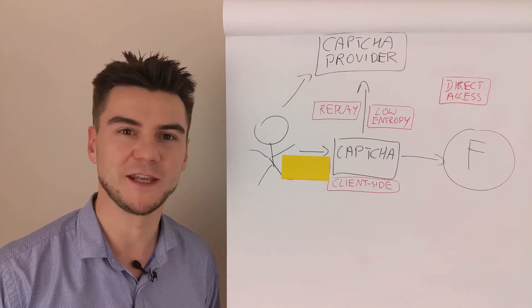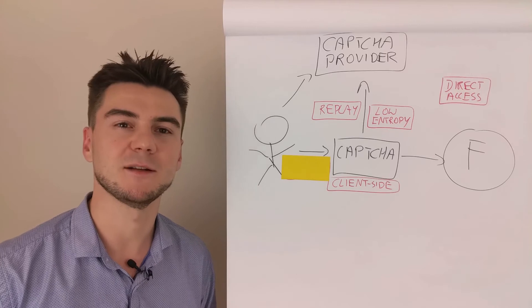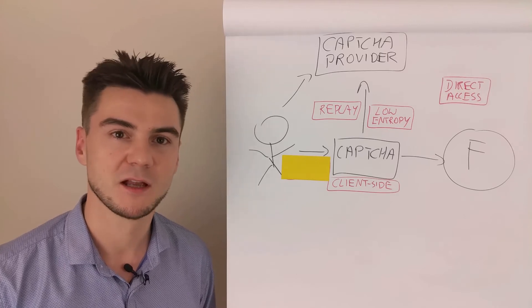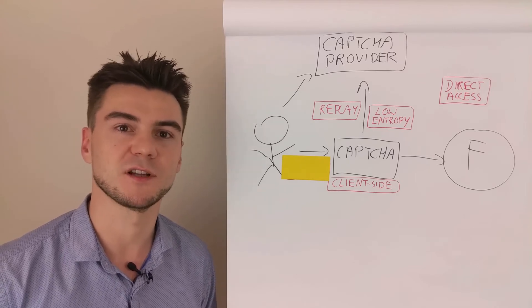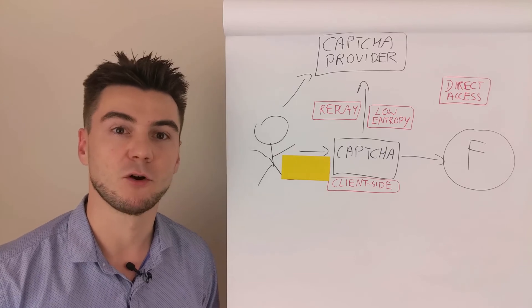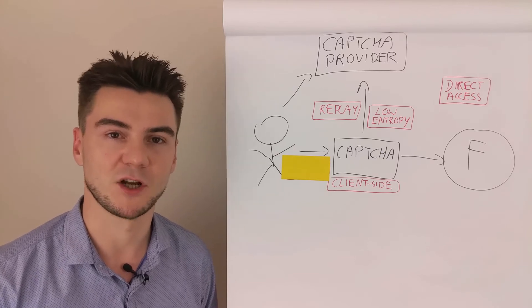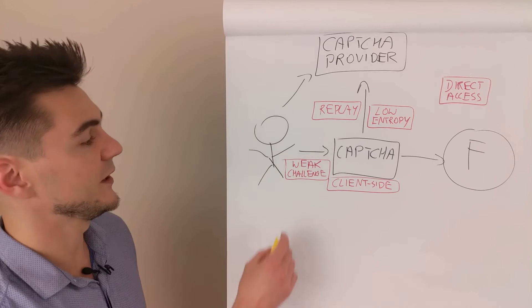And the last one is simply a weak CAPTCHA. So weak that it can be bypassed by automatic tools. For example, an OCR reader to transcribe the text or to automatically solve a manual challenge. It's got a weak challenge here.